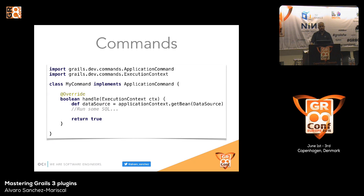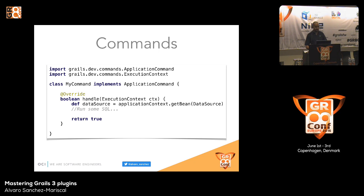Commands are different: they are a full class implementing ApplicationCommand, which provides a getApplicationContext() method giving you the Spring application context. When Grails runs your command it loads the Grails application first, which is useful if you want your command to interact with the data source or other beans — you can grab the data source bean from the Spring application context and do things with it.